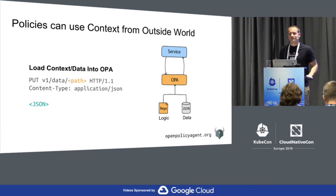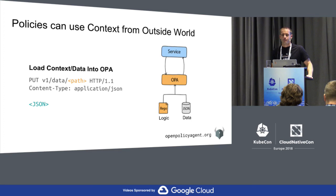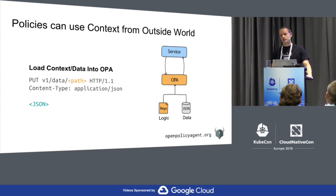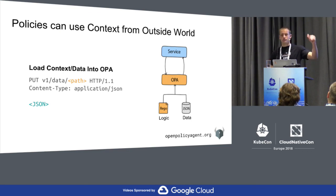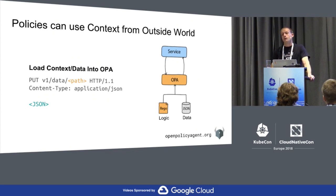Can you merge data when you send it into OPA? There is JSON patch support, so you can use that to push deltas in. In the policy language, if you're trying to merge data — for example, you had users from AD and users from LDAP and wanted all users — you can express that idea within the policy language using a virtual document, and then write your policy on top of that virtual document.